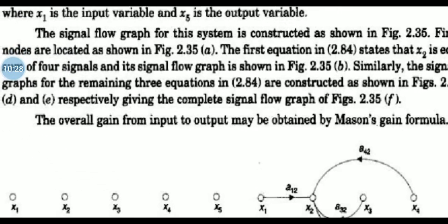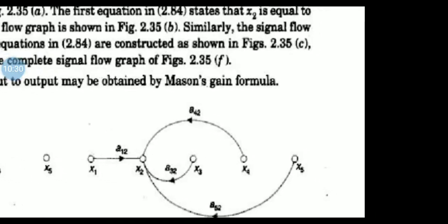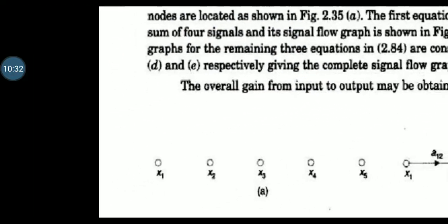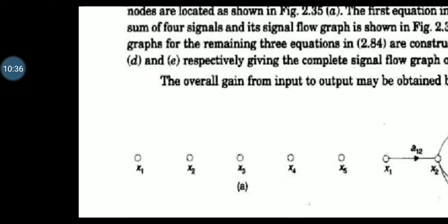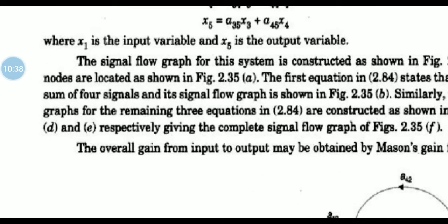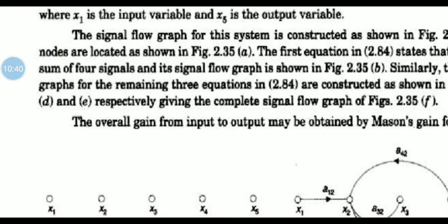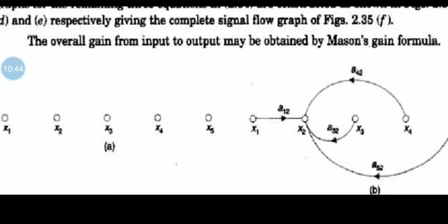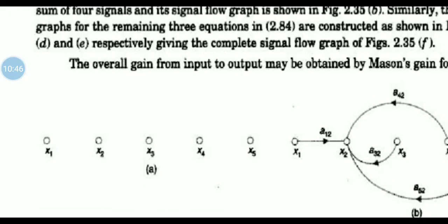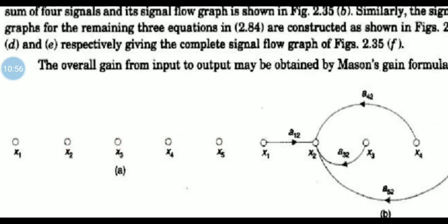Whatever the signal flow graph for the system, it is constructed as follows. First, we locate the nodes X1, X2, X3, X4, X5, represented by small circles. Then, X2 is expressed as A12·X1 plus A32·X3 plus A42·X4 plus A52·X5.